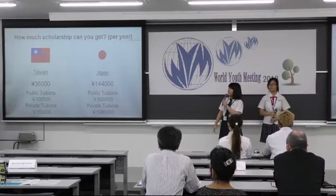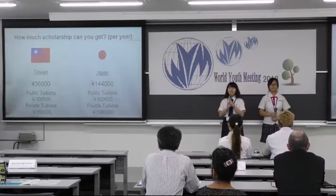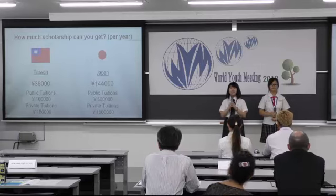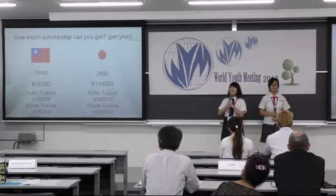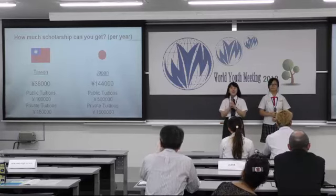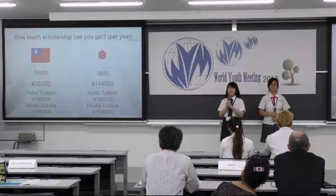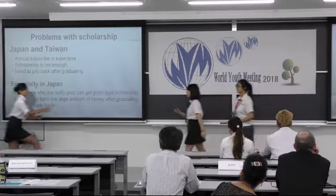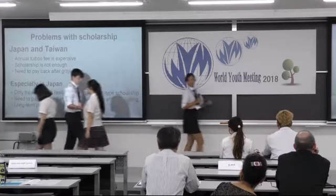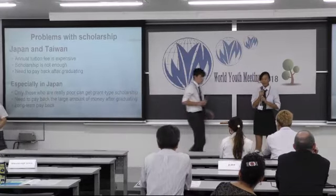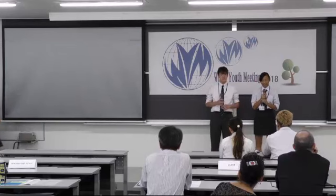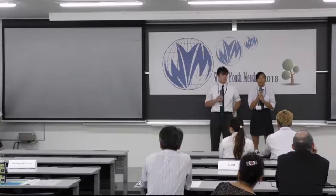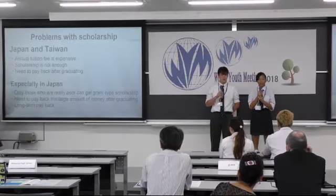In Taiwan, each person can get 36,000 yen per year on average out of the annual tuition fee. In Japan, each person can get 144,000 yen per year on average. In both Taiwan and Japan, the scholarship amount is not enough to cover the annual tuition fee, which is very expensive.